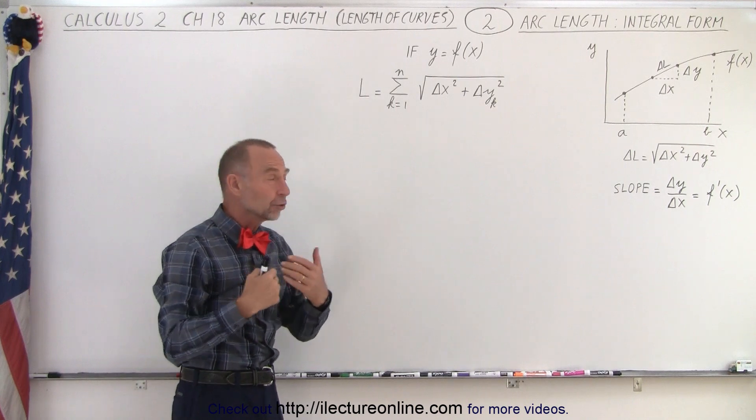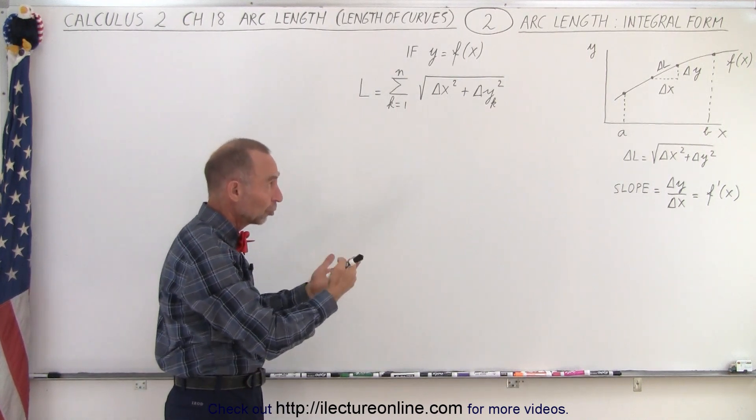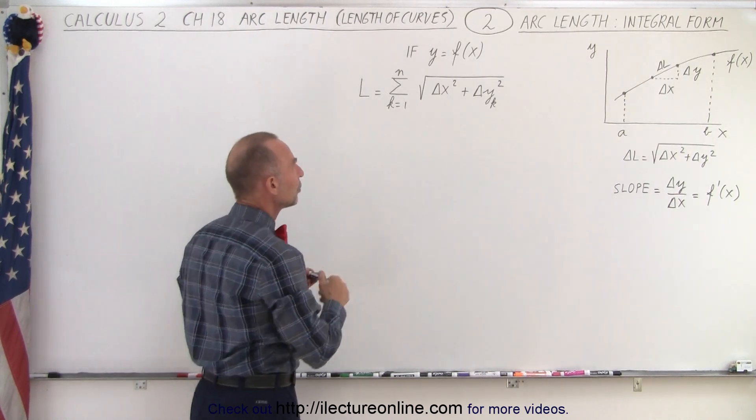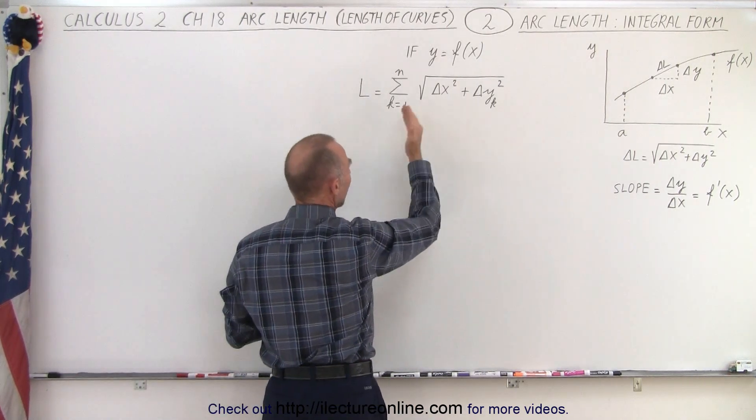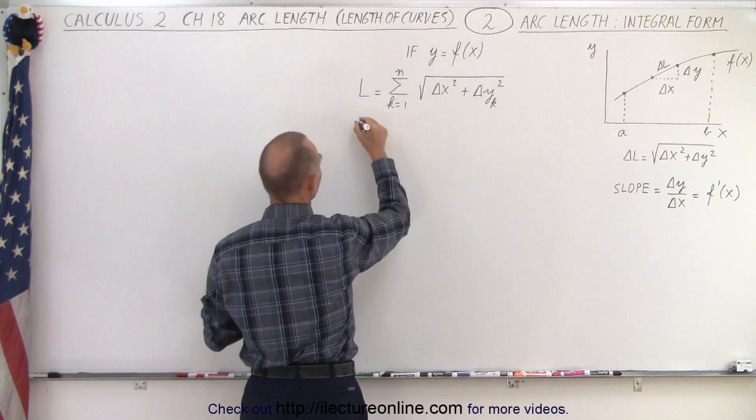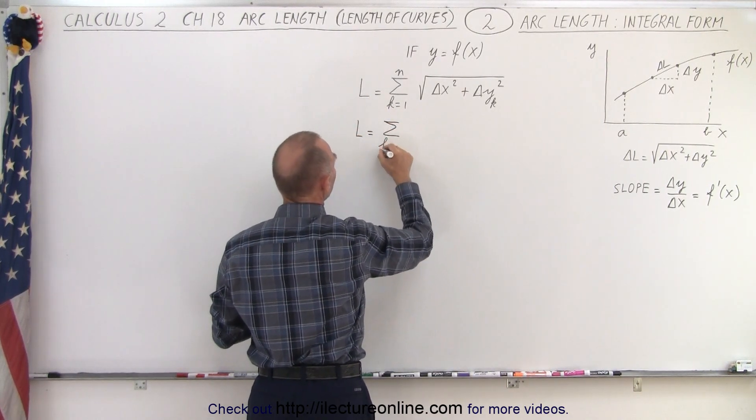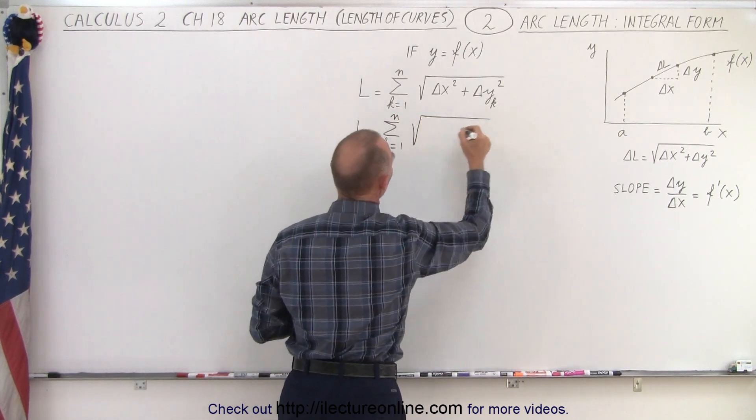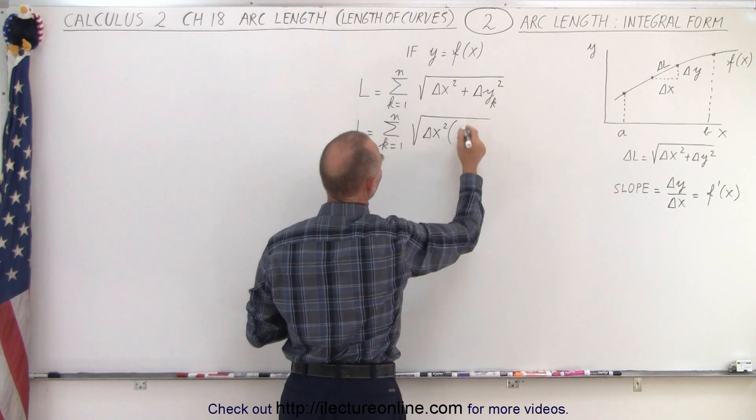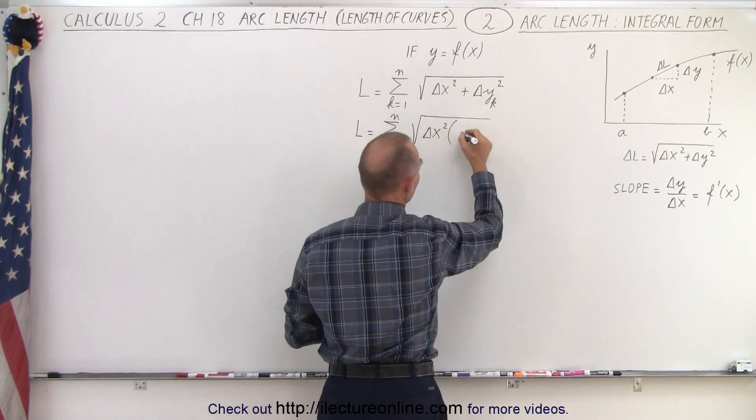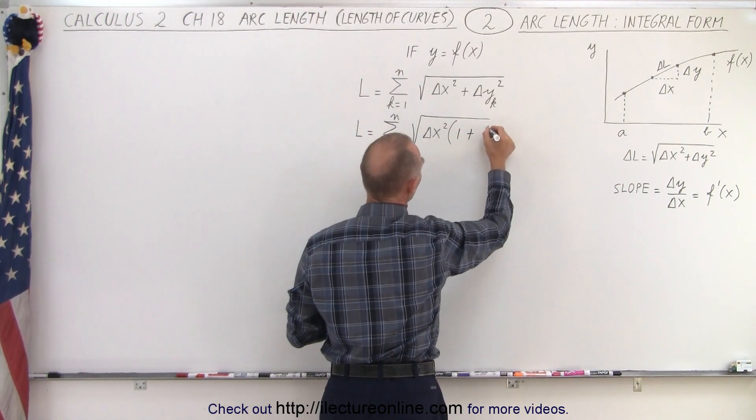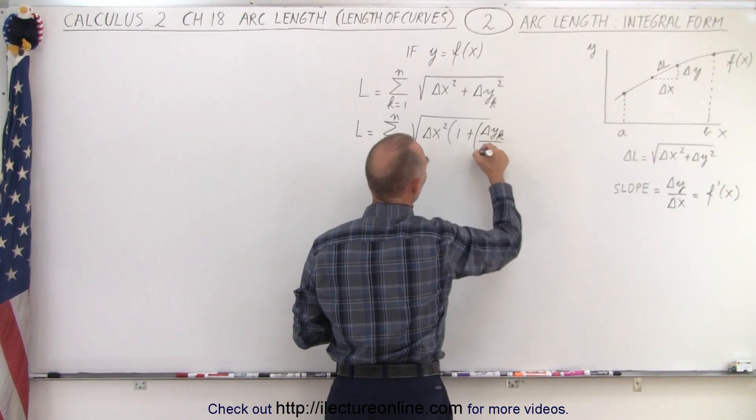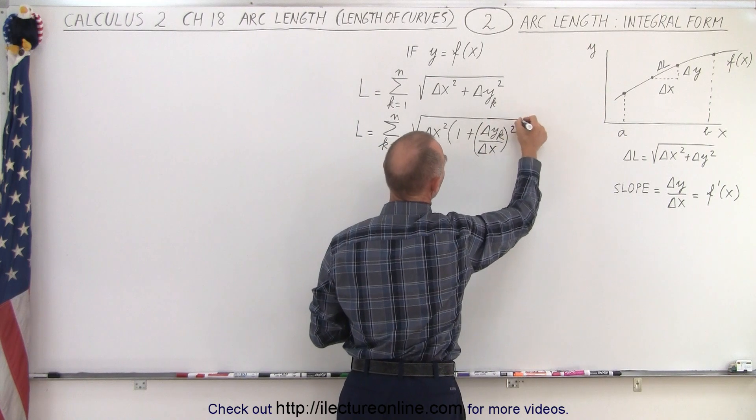And then we're going to use a mathematical trick that is used for a lot of these solutions when you're actually trying to calculate the arc length of different examples. We're going to typically use this kind of trick. We're going to try to factor something out. So we're going to write that L is equal to the sum from k equals 1 to n of the square root of delta x squared. We're going to factor that out of the two terms so we end up at a 1 here plus a delta y sub-k over a delta x quantity squared like this.